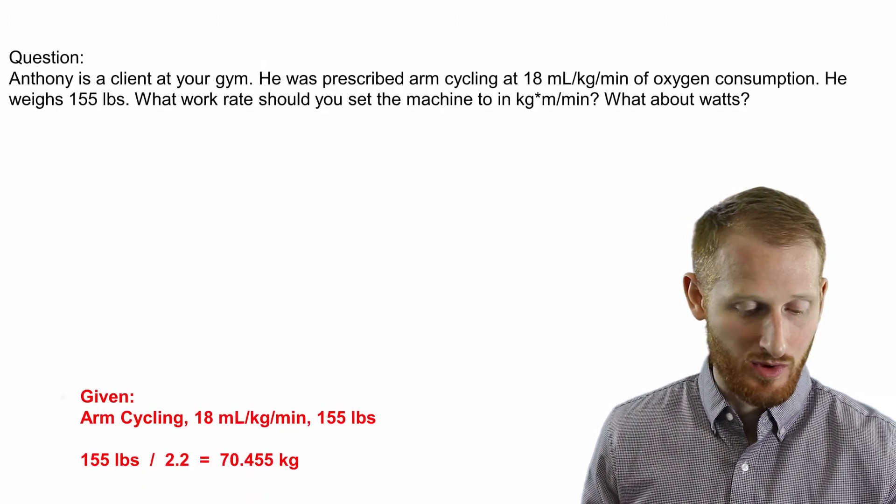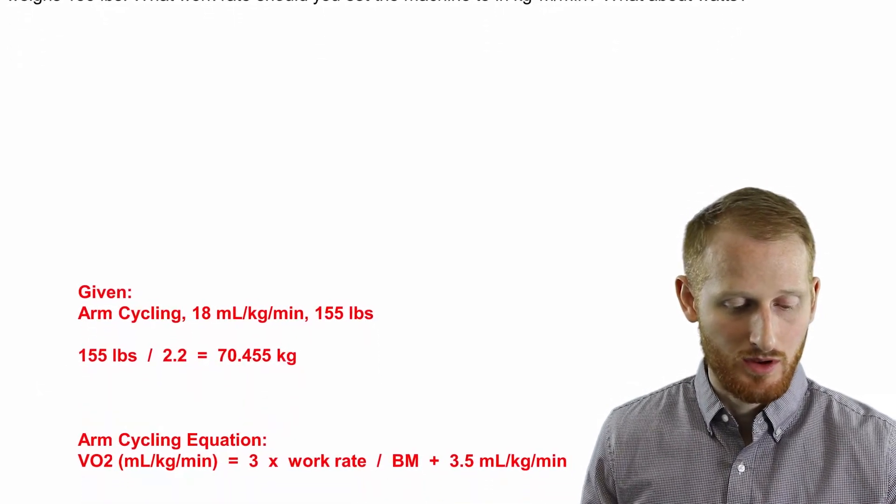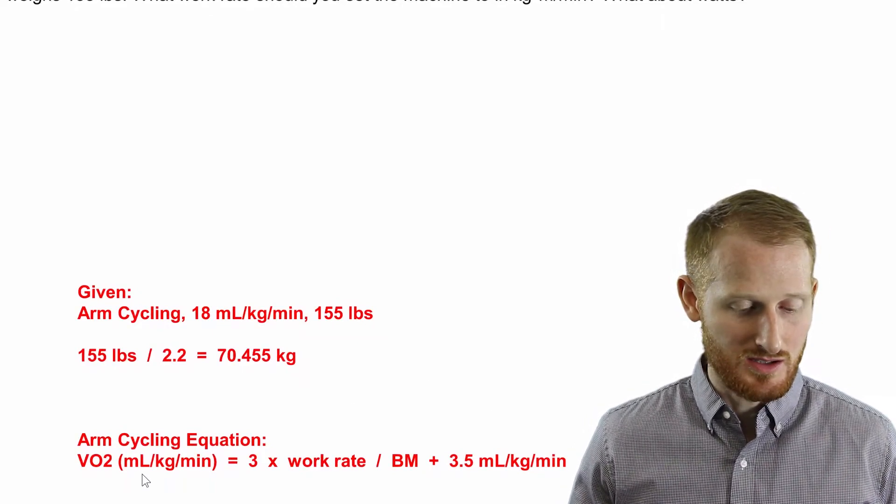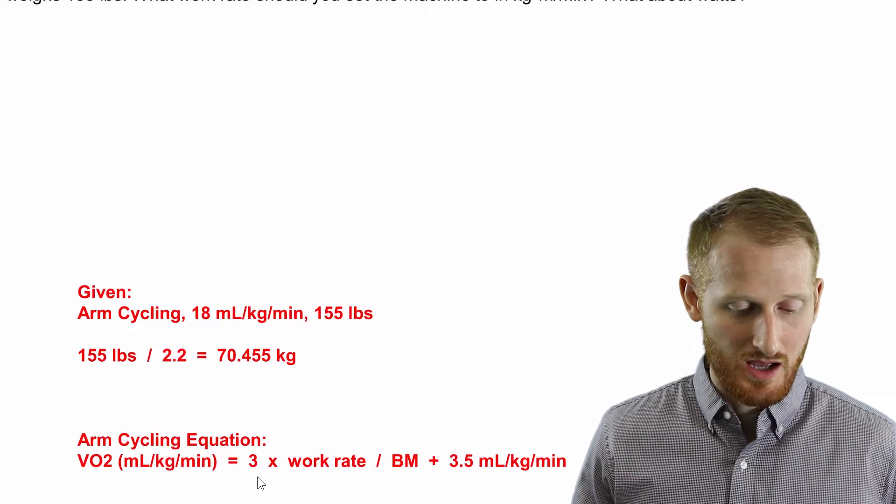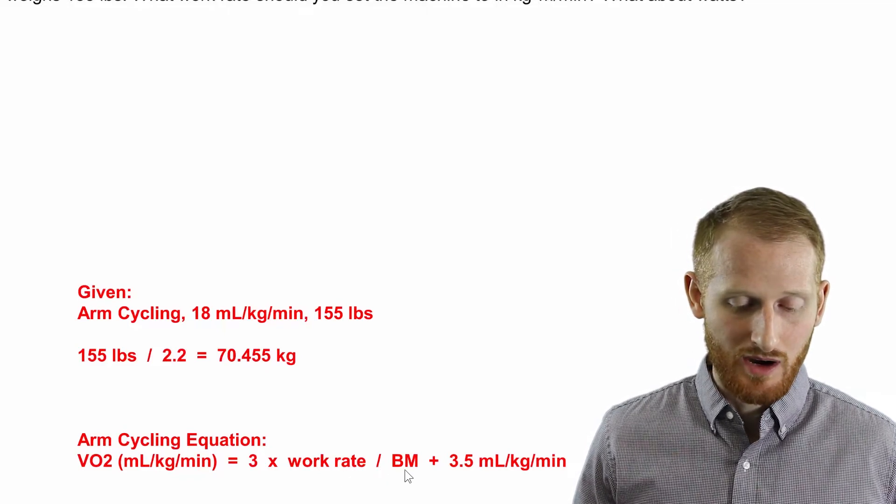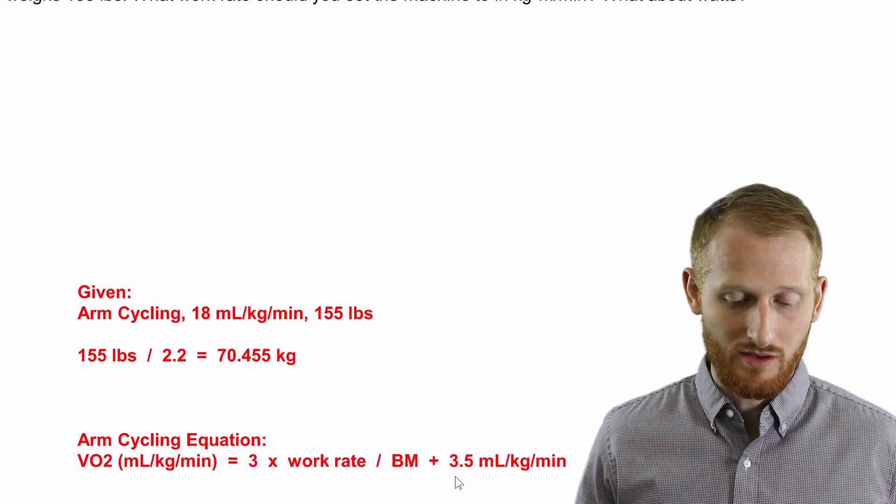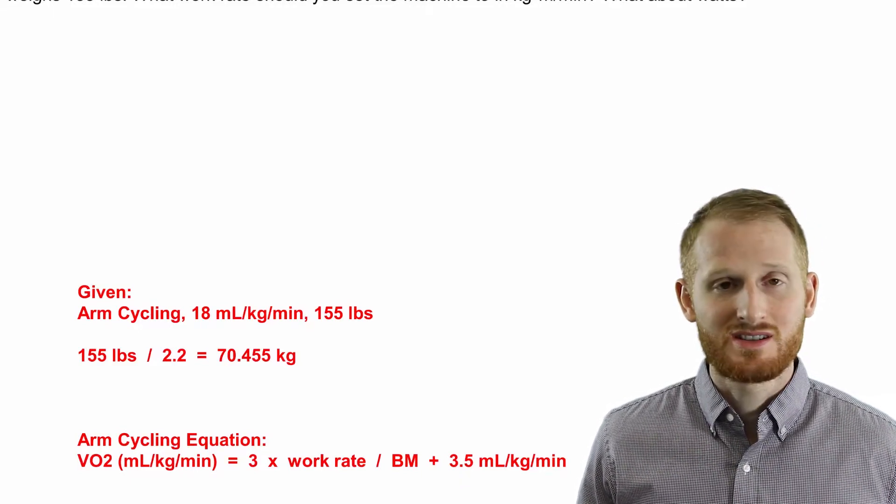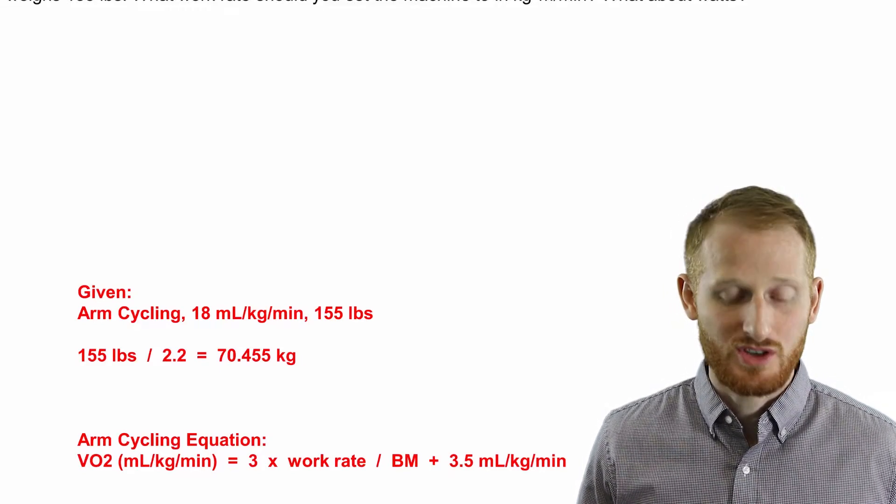All right, the next thing I'm going to do here is I'm going to actually pull up the arm cycling equation. So the arm cycling equation is relative VO2 in mLs per kg per minute is equal to 3 times the work rate, which is what we're trying to calculate, divided by the body mass plus resting VO2, which is 3.5 mLs per kg per minute.